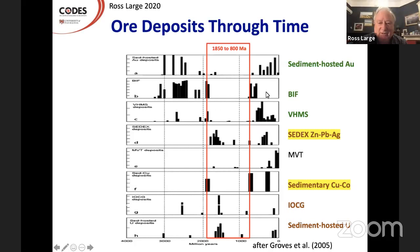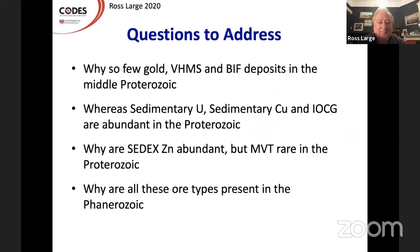So quite a distinct grouping of deposits in the Proterozoic that are very different to what we see in the Archean. And then when we get to the Phanerozoic, we've got all those deposits — the ones in the Archean are repeated and the ones in the Proterozoic are also repeated. And that's a real dilemma as to why we're seeing that happening. The questions I'd like to address are: why are there so few gold, massive sulfides, and BIFs in the middle Proterozoic? Whereas we've got sedimentary uranium, sedimentary copper, and IOCGs that are abundant. And why are SEDEX abundant in the Proterozoic whereas MVTs are rare, even though they're both lead-zinc systems?